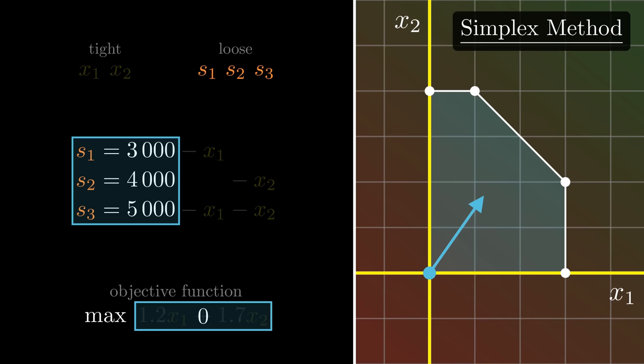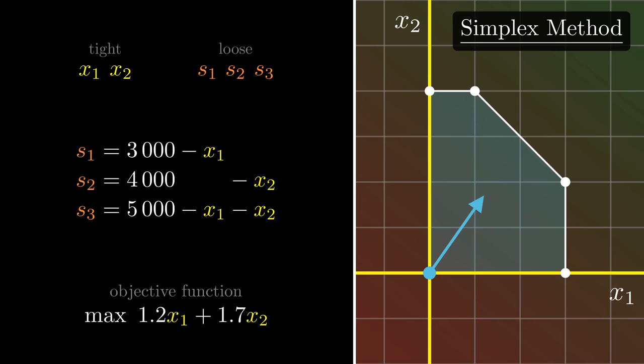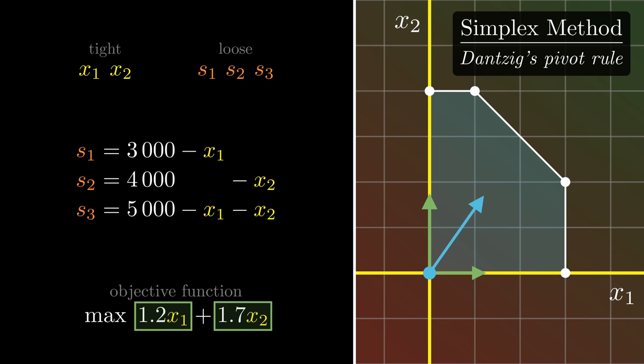First, we need to loosen a variable to determine which direction to go. There is a number of methods for selecting which to loosen, but we'll stick with the most commonly used one, called Dantzig's pivot rule, after the inventor himself. The rule is very simple. We select the variable with the largest positive coefficient in the objective function, i.e., the one representing the steepest direction towards the optimum. In our case, this is x2, which we loosen and start heading in its direction.